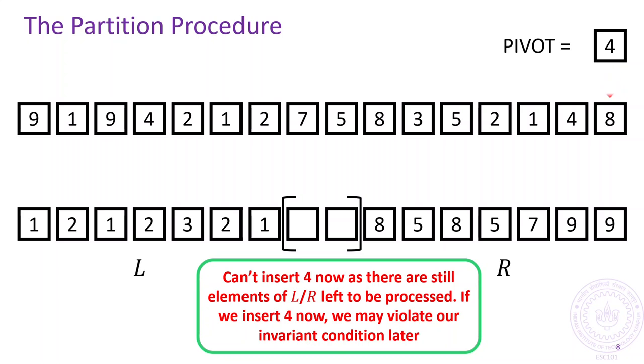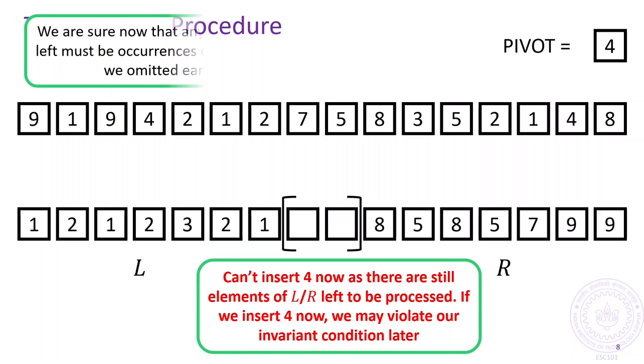Finally, once we have finished scanning the entire original array, we simply fill all the vacant locations with the pivot element since those must have been the occurrences of the pivot element that we have missed. And as you can see, we are done.